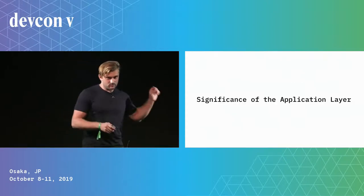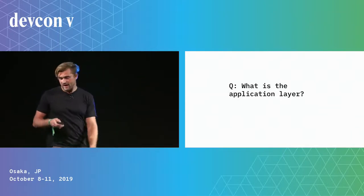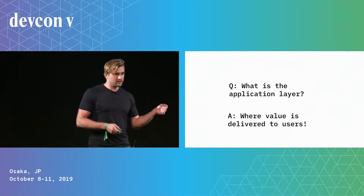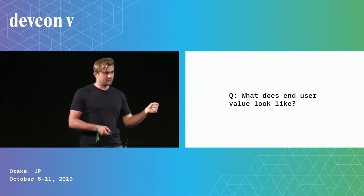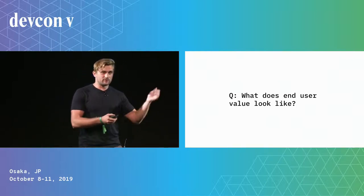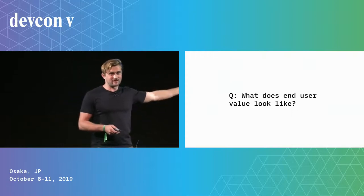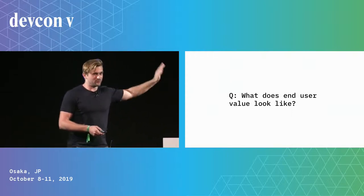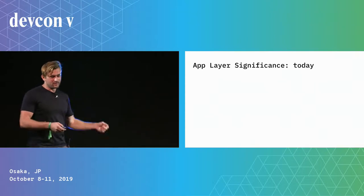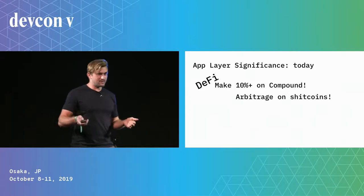Why do we care about mass adoption? We need to talk about the significance of the application layer. The application layer is where value is delivered to end users — that's fundamentally important. If we don't deliver that value, all of the work we're doing on the back end with scaling, sharding, etc., will go to waste. We're developing in a silo.